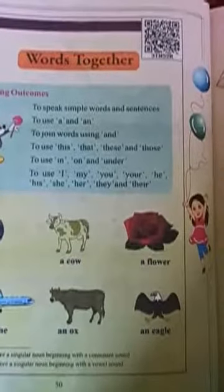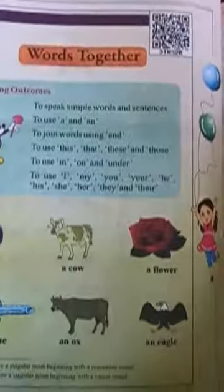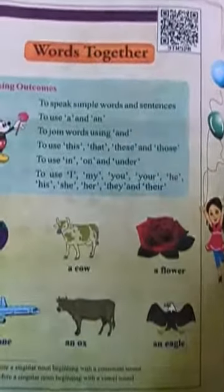To use this, that, these, and those. In Urdu: 'yeh' and 'wo'. These and those — 'yeh' refers to nearby objects and 'wo' to distant ones.